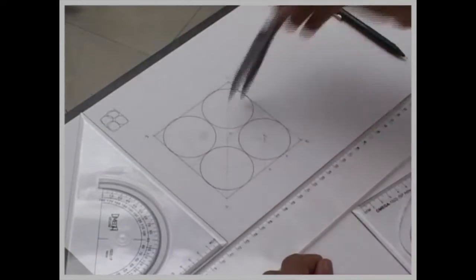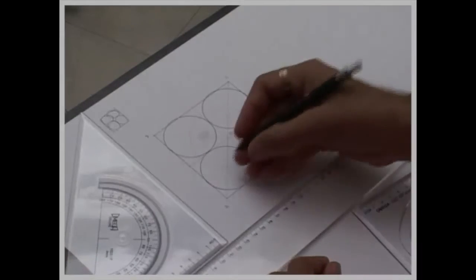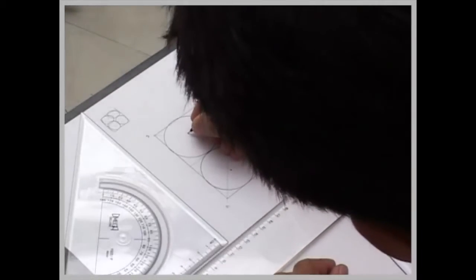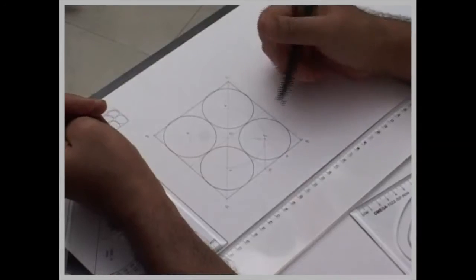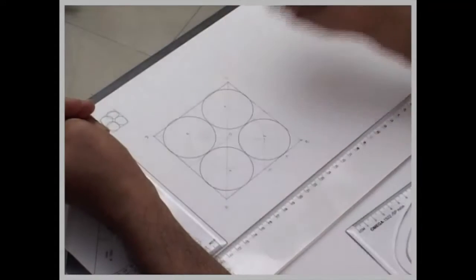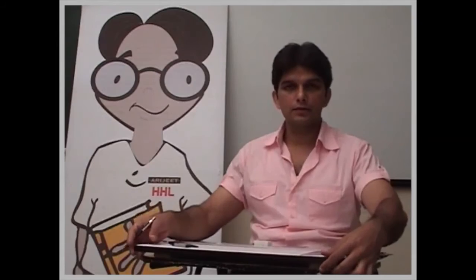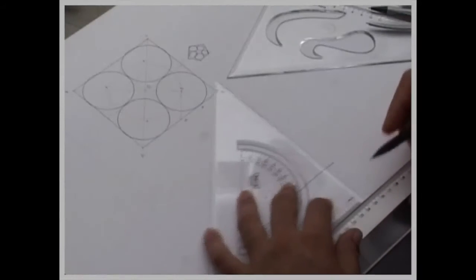you can draw the fourth one, so we got a square, inside square we got four circles touching two sides and two other circles, now we can do the same thing in pentagon also, first we will take a side 80mm,